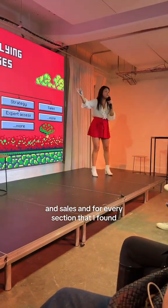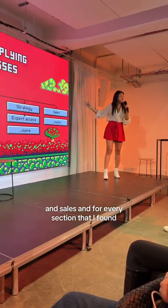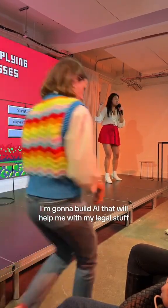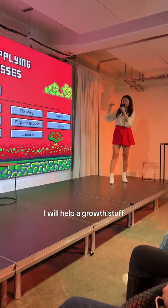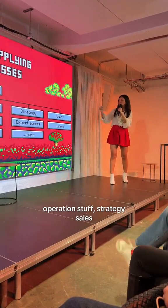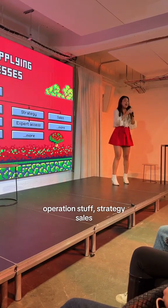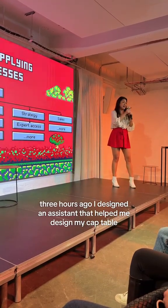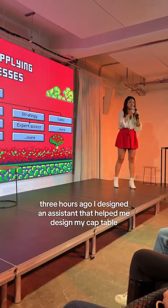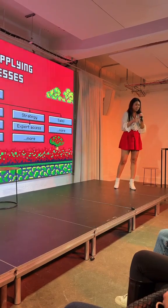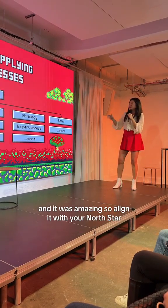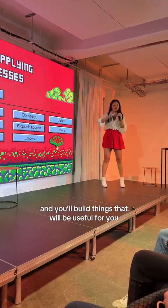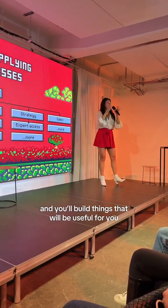For every section that I found, I was going to build AI that will help me with my legal stuff, growth stuff, operations stuff, strategy, and sales. Three hours ago, I designed an assistant that helped me design my cap table, and it was amazing. So align it with your North Star and you build things that will be useful for you.